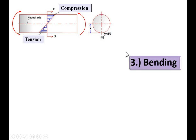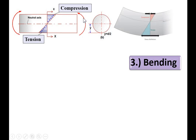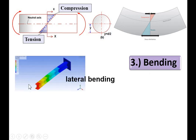The third type is bending stress. Looking at this figure of a beam, there is a neutral axis. Above the neutral axis there is compressive stress, and below the neutral axis there is tensile stress. The beam is subjected to a bending moment in this direction, causing it to bend. In the upper portion there is compression, and in the lower portion there is tension. These compressive and tensile stresses are known as bending stresses.